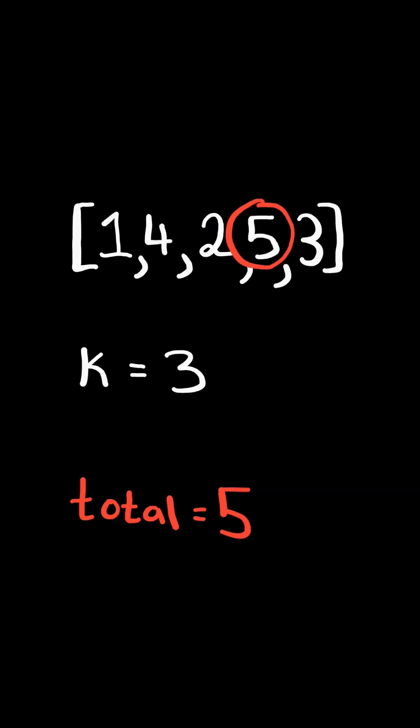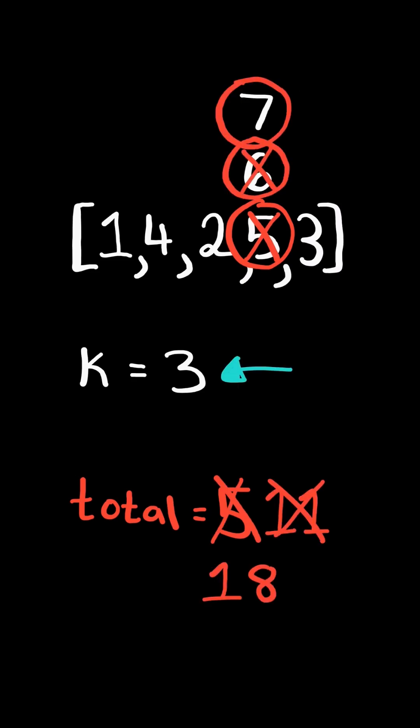If we keep choosing the max value, it will be replaced by the new maximum, and we keep choosing it, a total of k times, and this will achieve the maximum result.